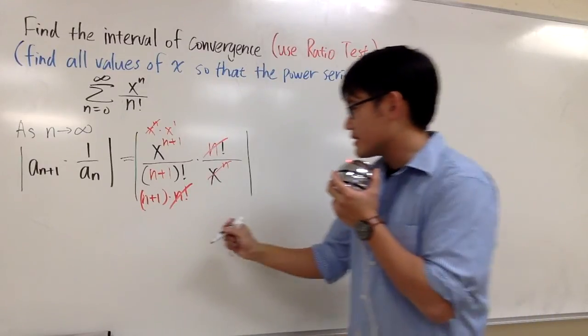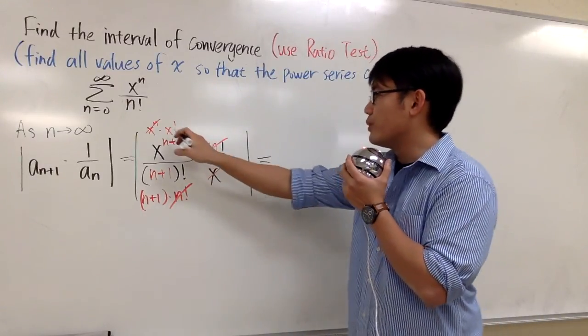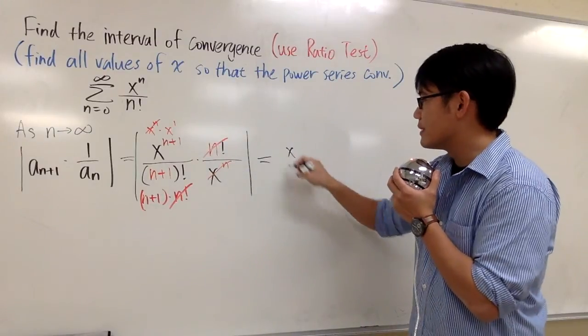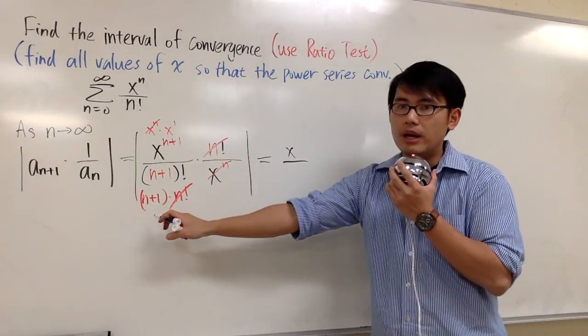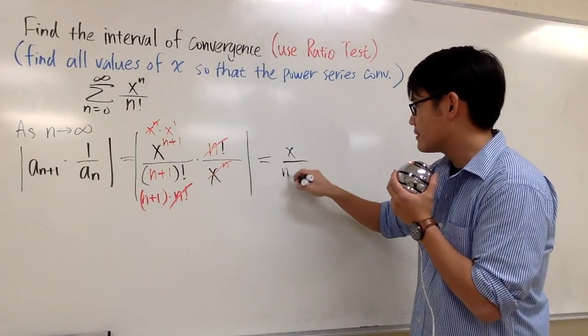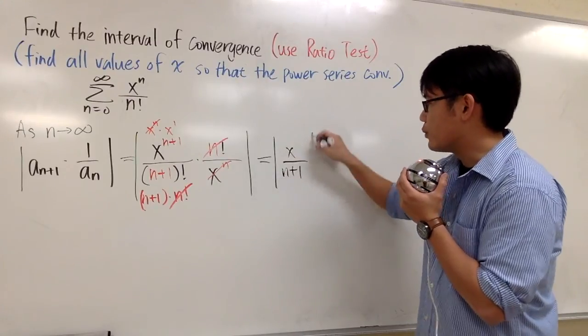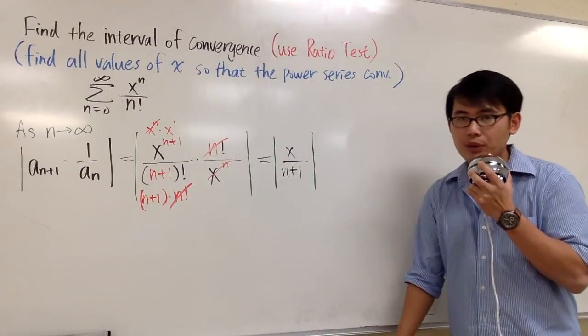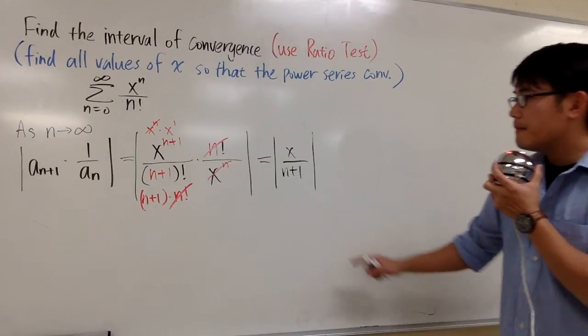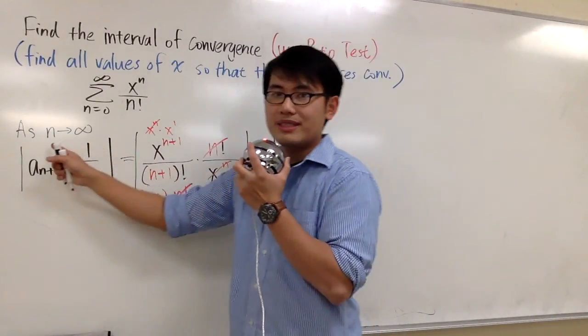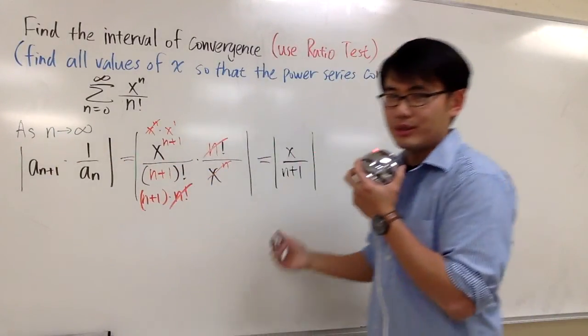And now what do we get? This is equal to x on the top over n+1 on the bottom. And then, once again, we still have the absolute value. And then, let's take a limit as n goes to infinity to see what we get.